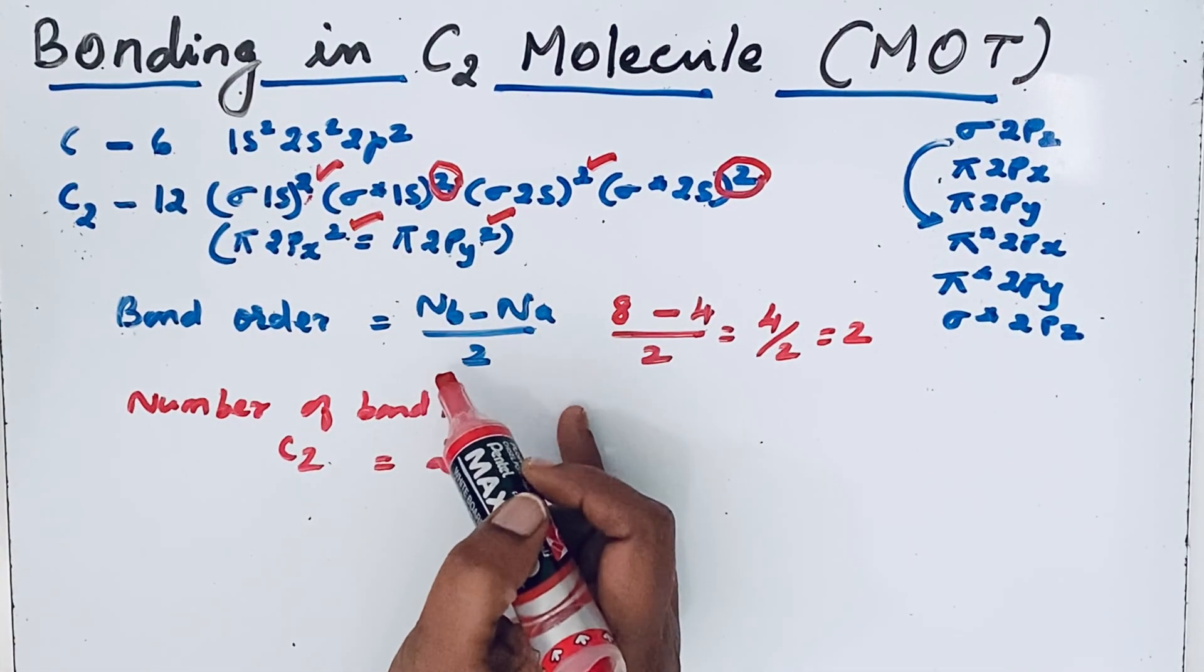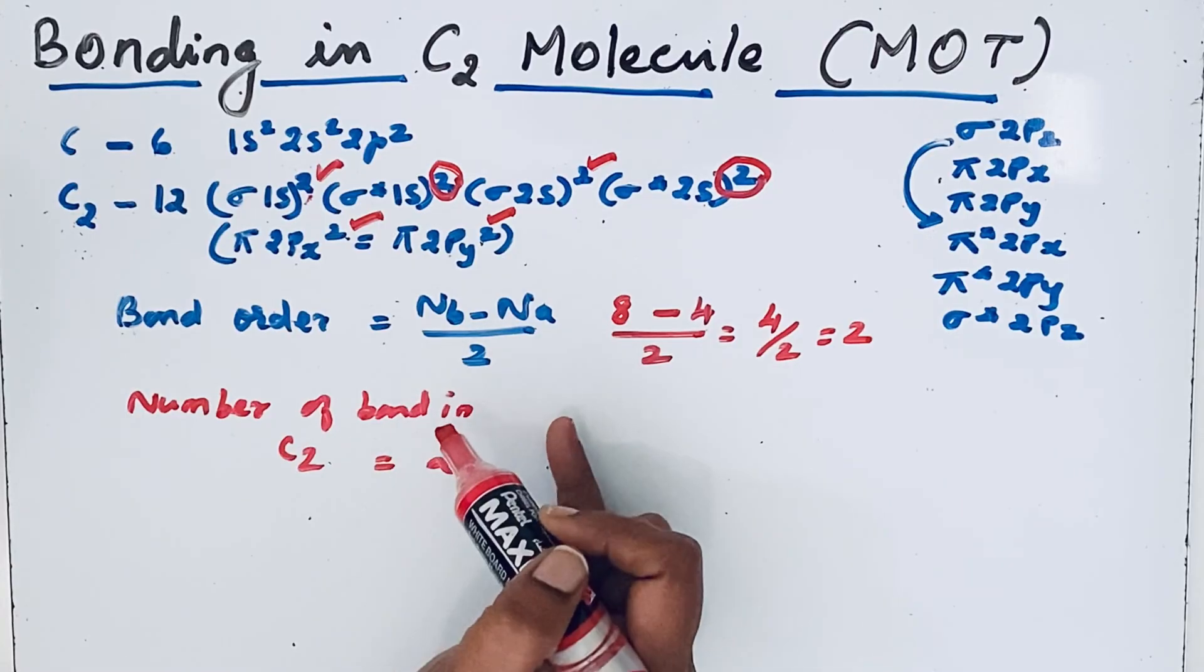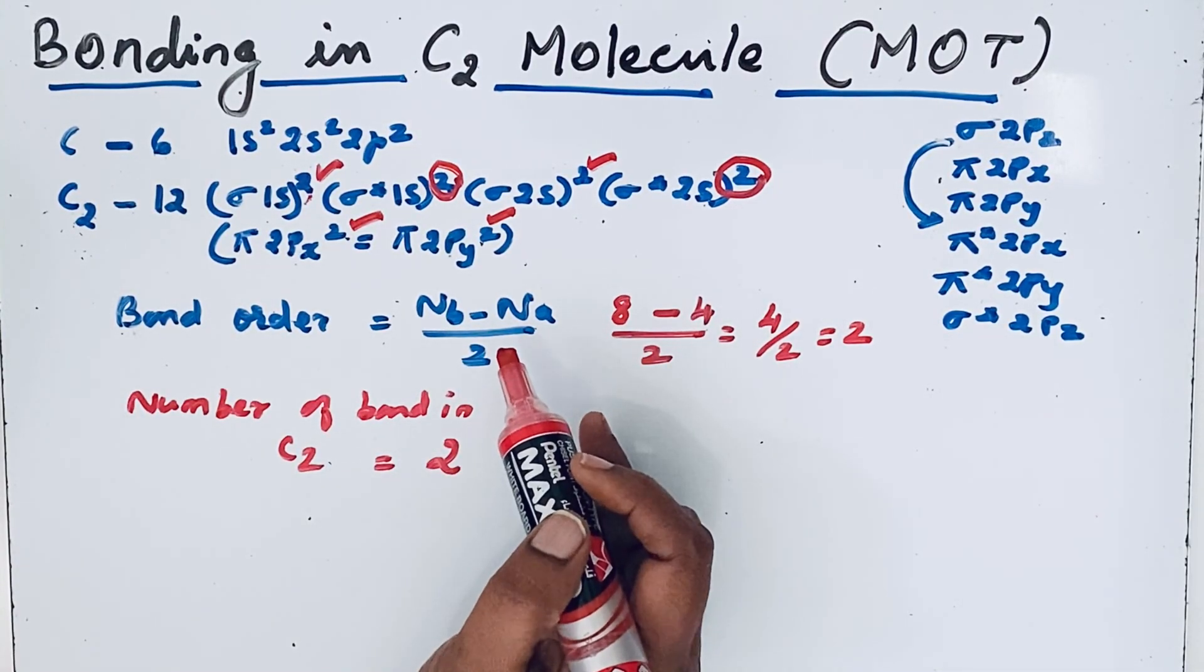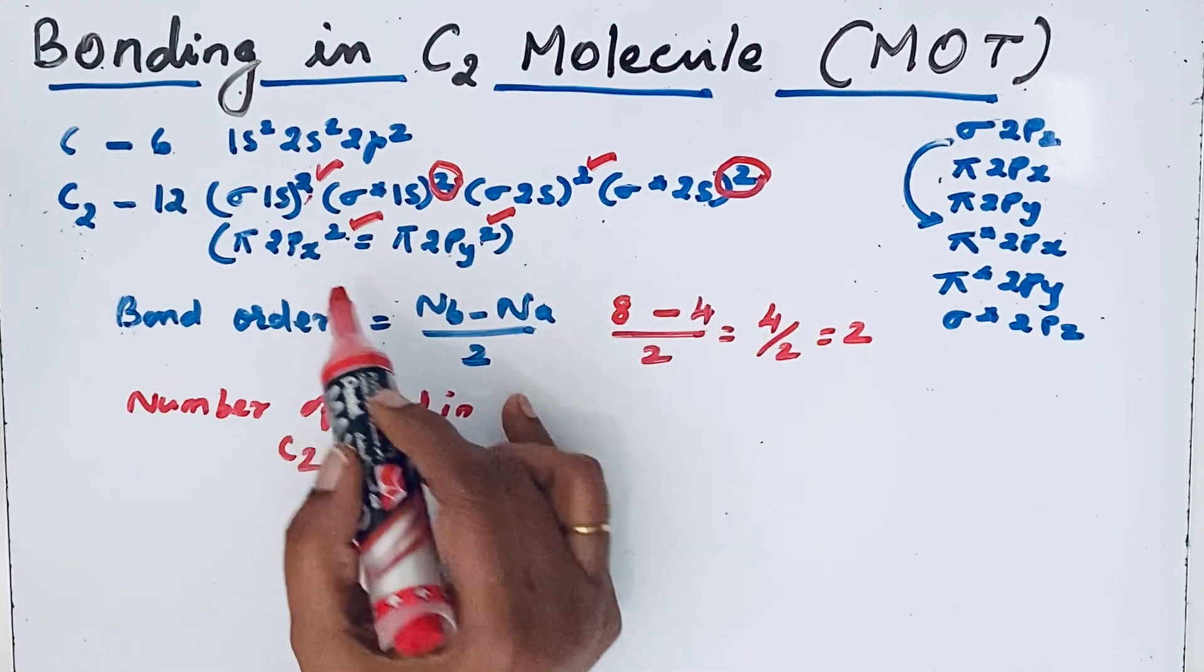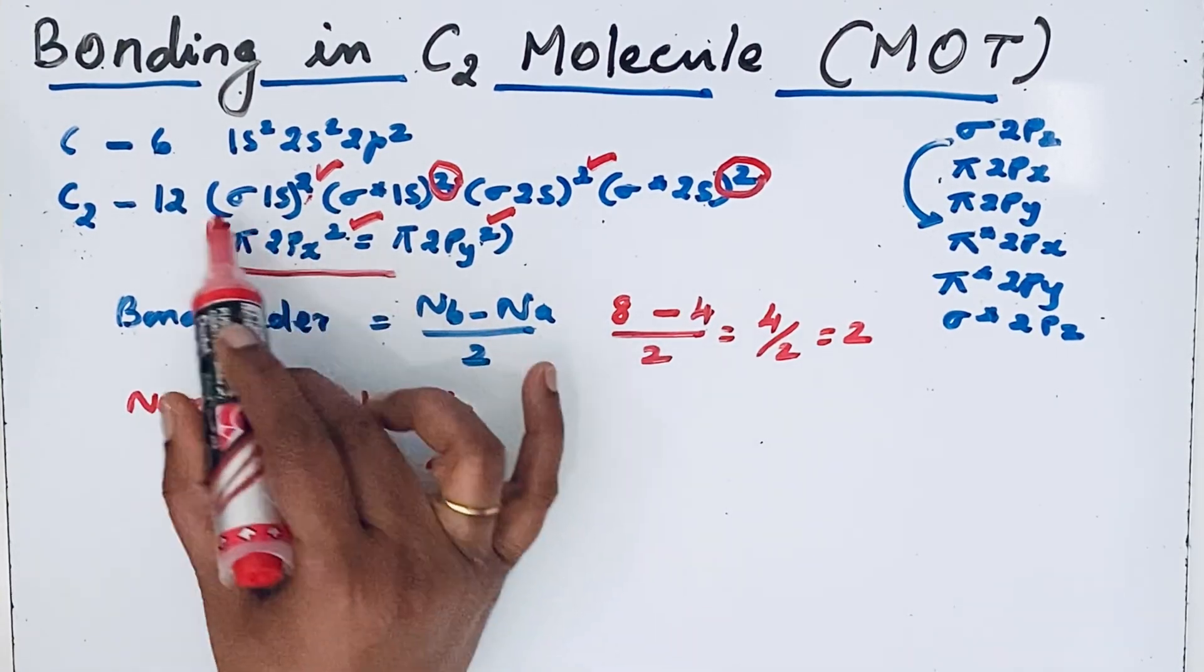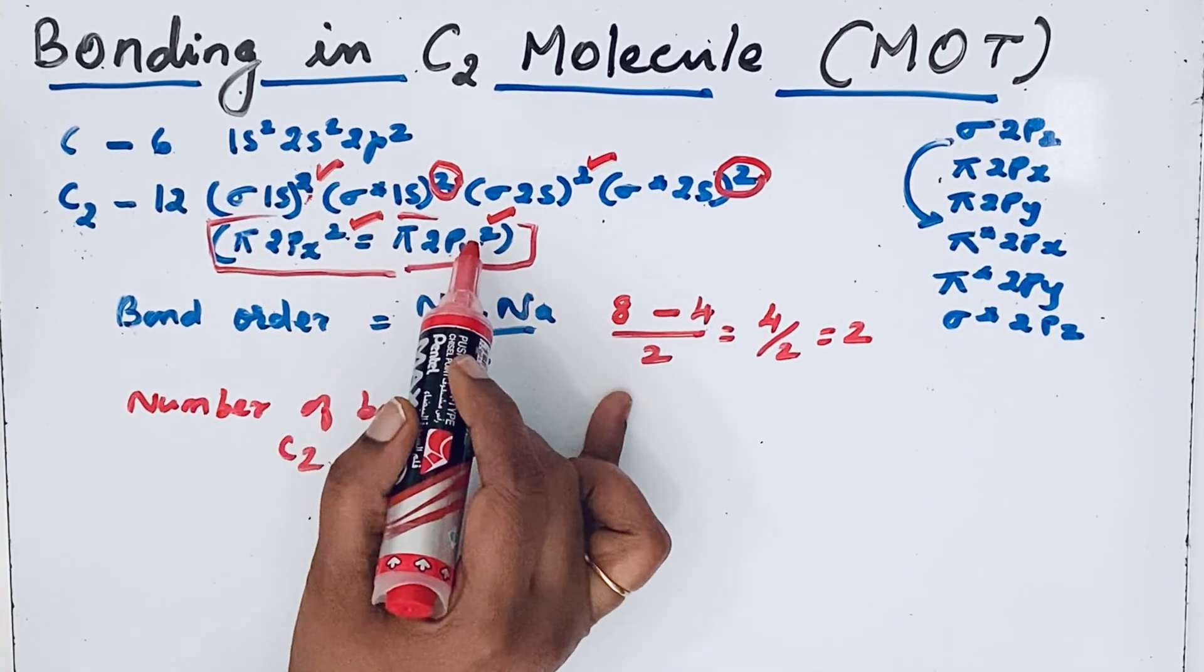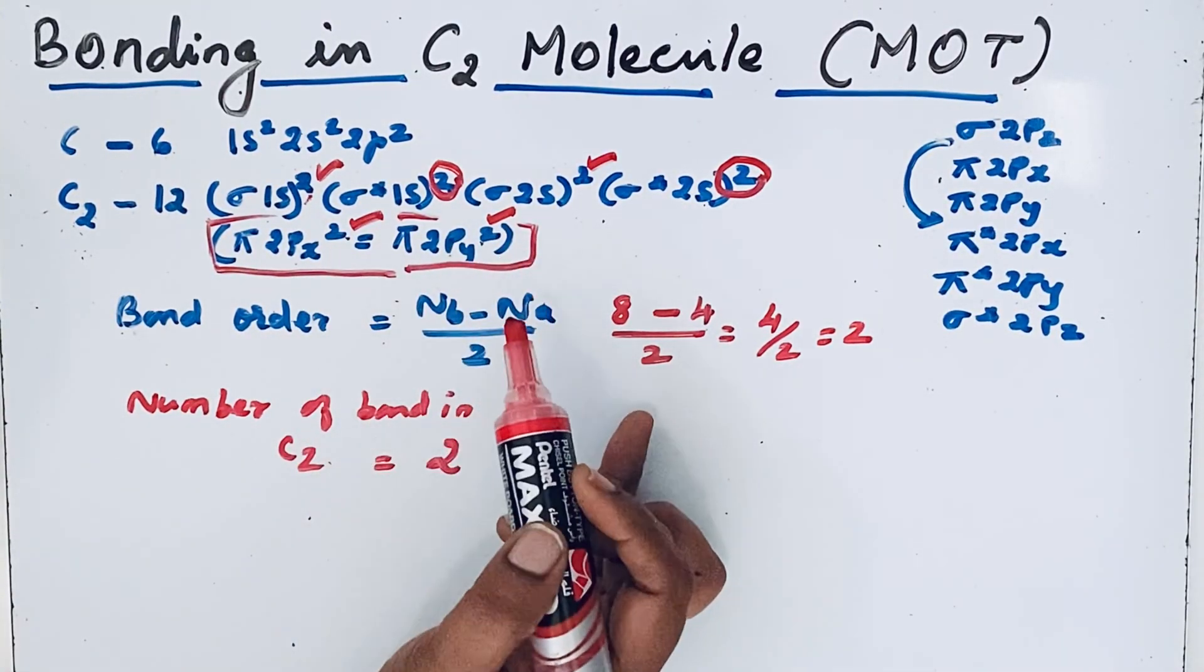In most other molecules, a double bond is made up of a sigma bond and a pi bond. But in C2 molecule, it consists only of pi bonds, both pi bonds only, because of the 4 electrons in the pi molecular orbitals.